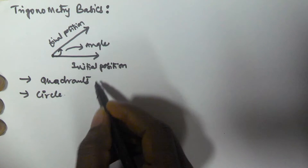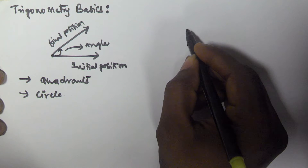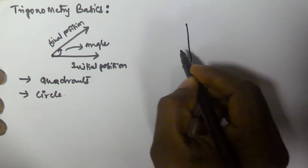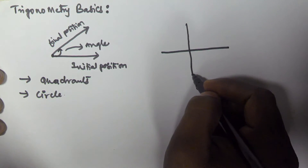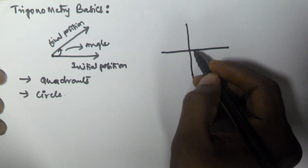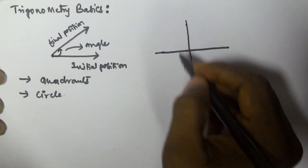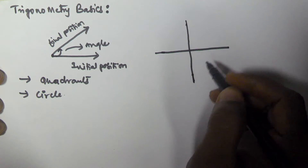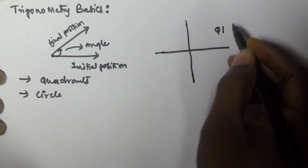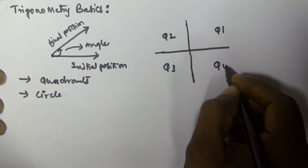We will see how to measure this angle with respect to the quadrants. If you take two perpendicular lines — lines that make 90 degrees with each other — they are called perpendicular lines. When two perpendicular lines are drawn, they make four quadrants: quadrant one, quadrant two, quadrant three, and quadrant four.